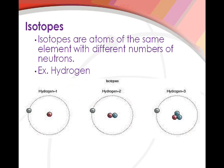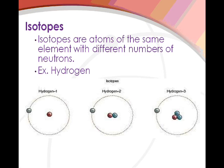Let's look at an example of hydrogen. Hydrogen 1, hydrogen 2, and hydrogen 3 are all isotopes of hydrogen. The example here shows you that you can also write the element name with the mass number. Hydrogen 1 means that hydrogen has a mass of 1, hydrogen 2 means a mass of 2. You can also see it as carbon 12 or nitrogen 14, so be familiar with how that's written.